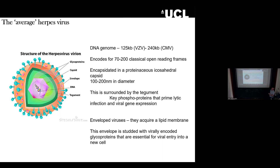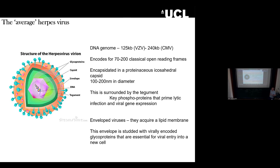All of that is then encapsulated in an envelope, which the virus acquires from the plasma membrane as it buds out of the cell. That envelope is studded with many different glycoproteins. These glycoproteins give the virus its tropism for cells — they bind to cell surface receptors and allow the virus to enter. For example, glycoprotein B in herpes viruses is the key fusogen, equivalent to spike in SARS-CoV-2 — it's the thing that drives virus entry.